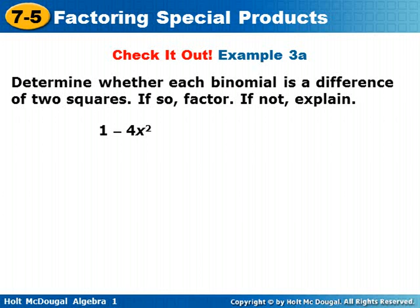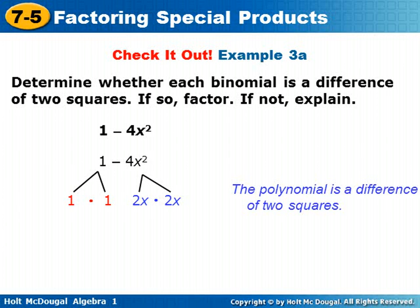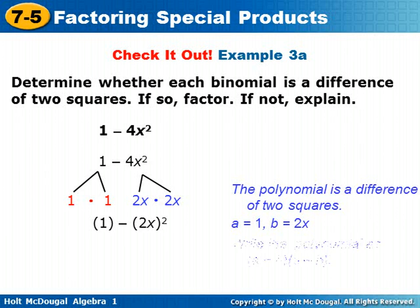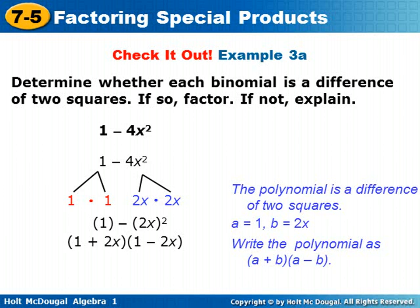Determine whether each binomial is a difference of two squares. If so, factor. If not, explain. For 1 minus 4x squared — try this on your own and check back. 1 is a perfect square — 1 times 1, or 1 squared. 4x squared is a perfect square — 2x times 2x, or 2x squared. The polynomial is a difference of two squares. A equals 1 and B equals 2x, so 1 squared minus 2x squared. We write it as a plus b times a minus b: 1 plus 2x times 1 minus 2x. So 1 minus 4x squared equals 1 plus 2x times 1 minus 2x.